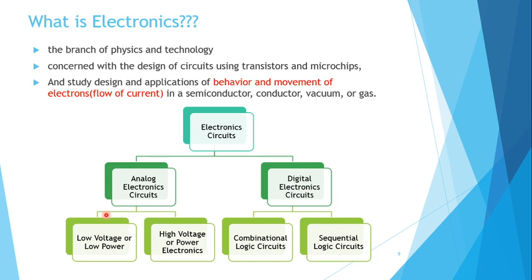Analog electronics can be further divided into low voltage or low power — which you have already studied — and high voltage, also called power electronics. Electronics students will have power electronics as a subject in an upcoming semester, dealing with high voltages such as 440 volts or more, with high current and high power.